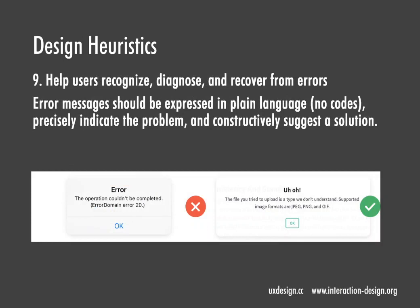Help users with errors: consider the difference between a bad and a good error message. 'The operation could not be completed — error domain error 20' is unhelpful. Designers should assume users are unable to understand technical terminology. Error messages should be expressed in plain language. A good example: 'Oh! The file you tried to upload is a type we don't support. Supported image formats are JPEG, PNG, and GIF.'